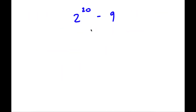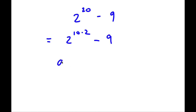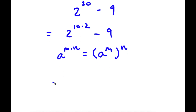Alright, so I have 2 to the power of 20 minus 9. First, 2 to the power of 20 we can rewrite as 2 to the power of 10 times 2, because 20 equals 10 times 2. Then I have minus 9. If I have something in the form a to the power of m times n, this equals a to the power of m to the power of n. So 2 to the power of 10 times 2 equals 2 to the power of 10, to the power of 2. And minus 9 we can rewrite as 3 squared.